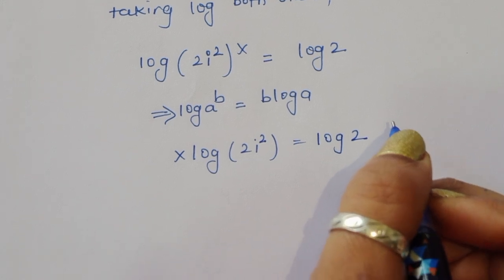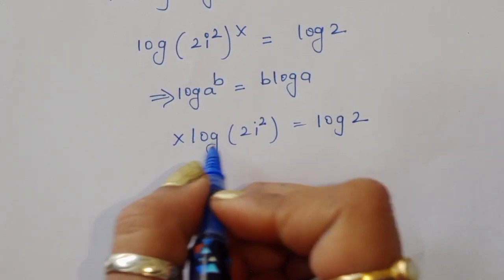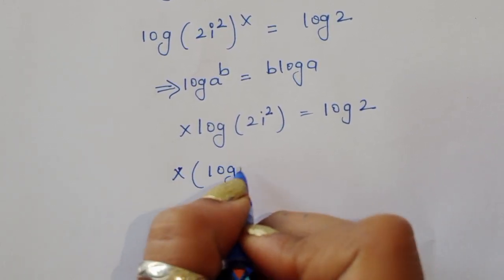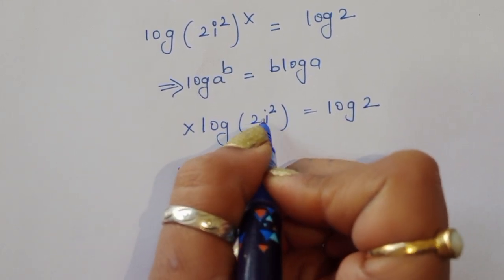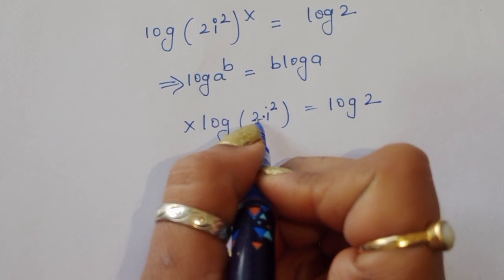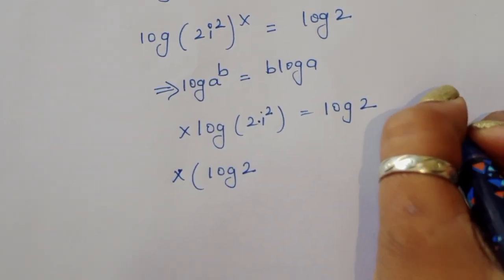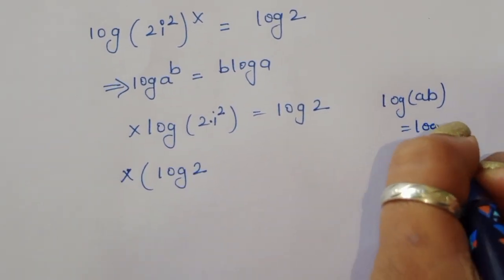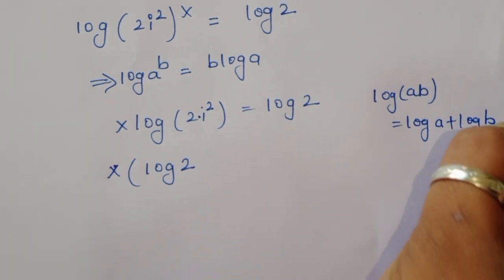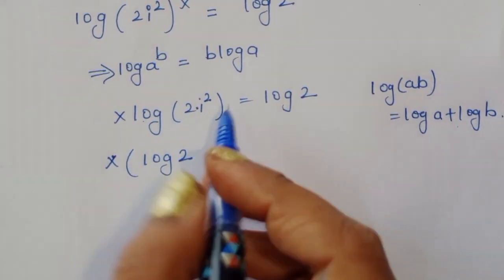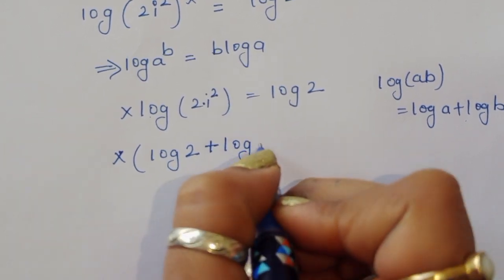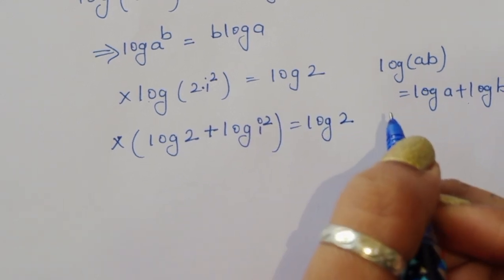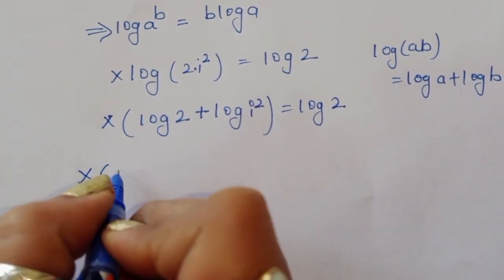Now 2i² is a multiplication, so we know the formula log(ab) = log(a) + log(b). Using this formula, x·log(2i²) becomes x·[log 2 + log(i²)] = log 2.